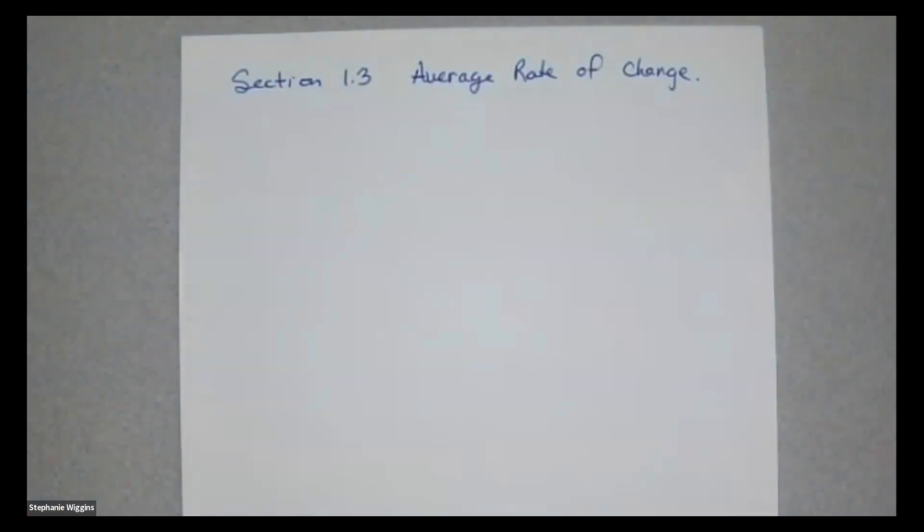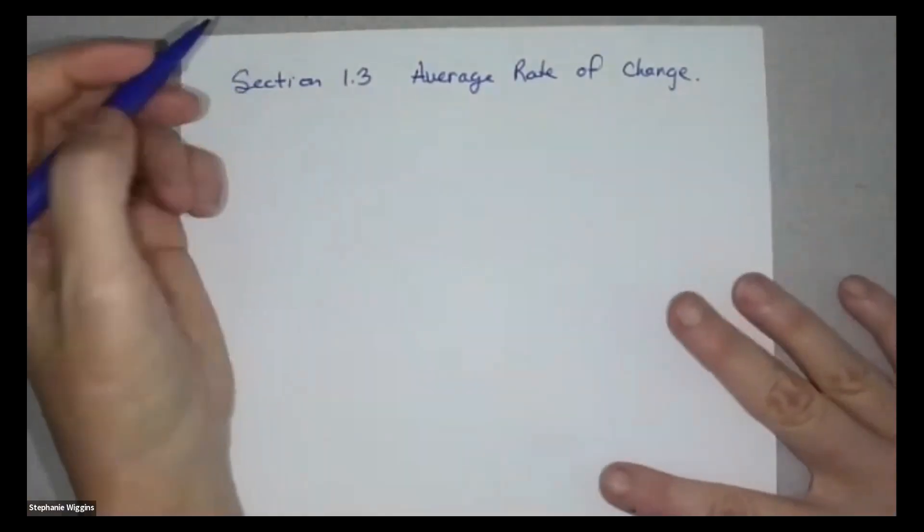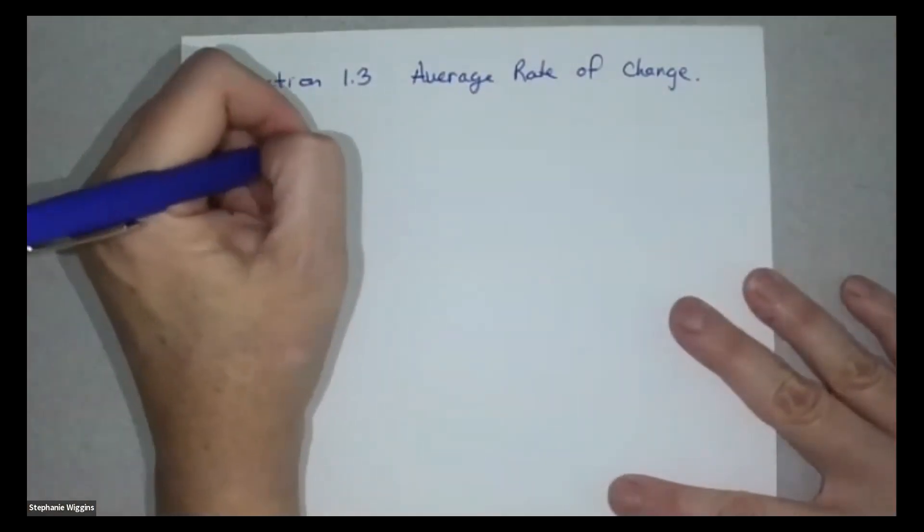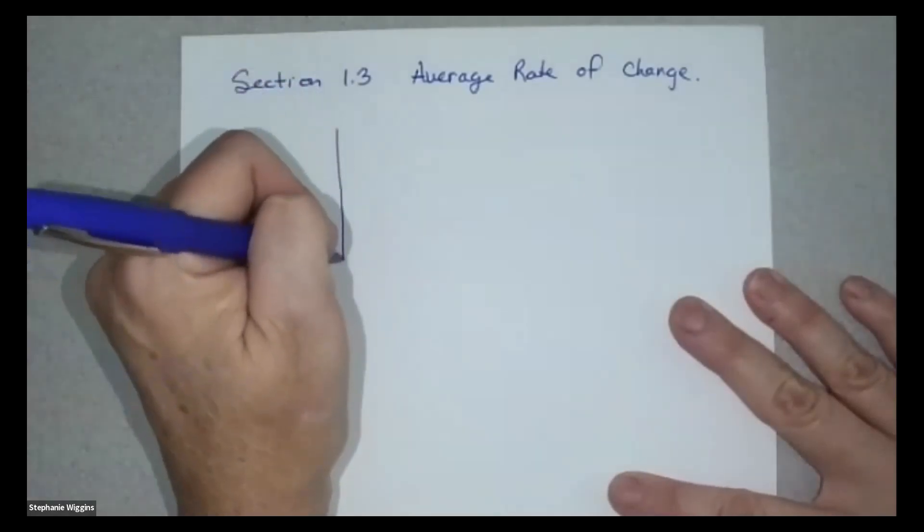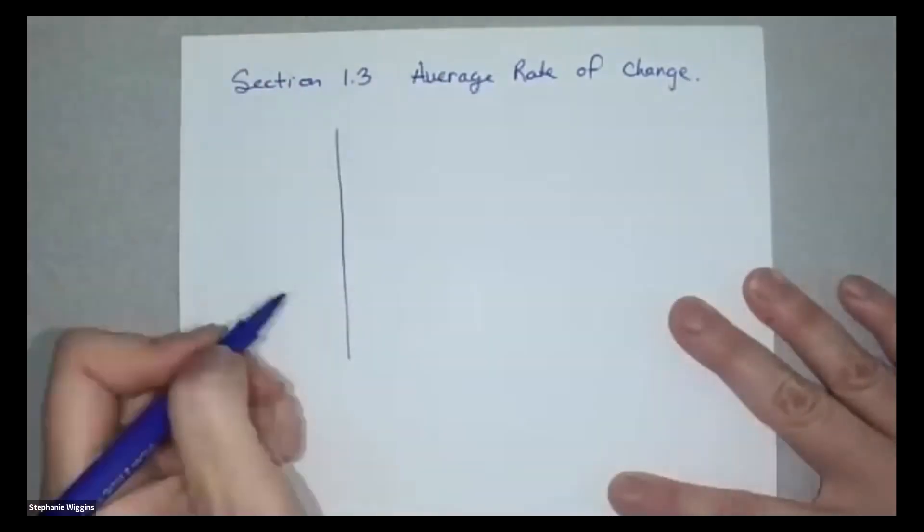It's a pretty simple concept because it involves the slope of a line and we've done quite a bit of work in algebra with lines and their slopes and how to calculate them. So this is sort of a review for you. We're just going to talk about the slope of the line in the context of average rate of change.